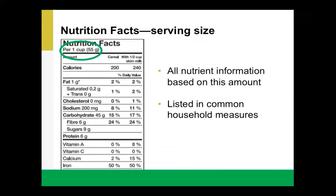When reading a food label, it's important to start with the serving size first, because all the information listed on the nutrition facts table is based on that serving size amount. The serving size will be given first in common household measures — for example, one cup — and then in metric units in brackets, such as grams or milliliters, which can make comparing different products easier. It's important to look at serving sizes when comparing products because they may vary between brands.